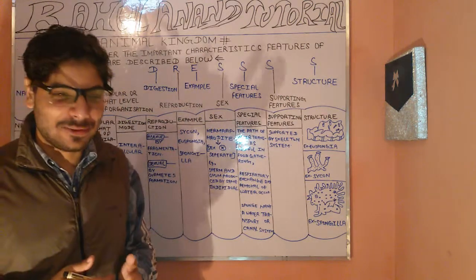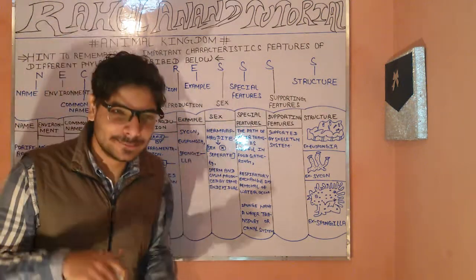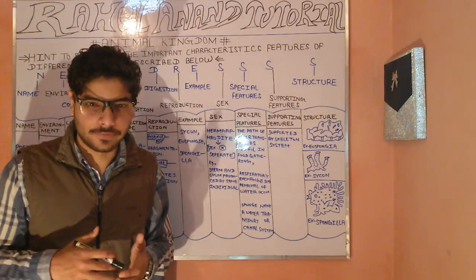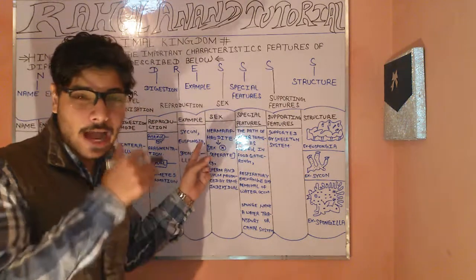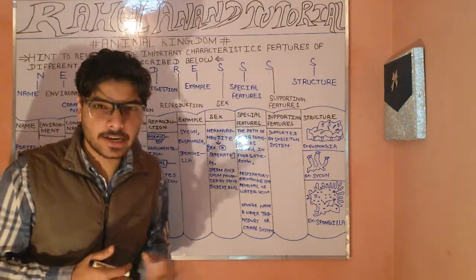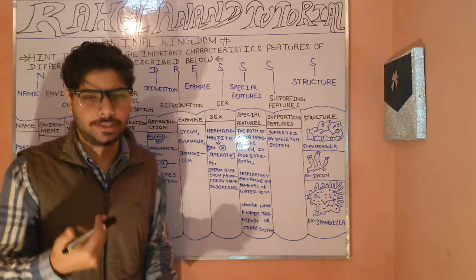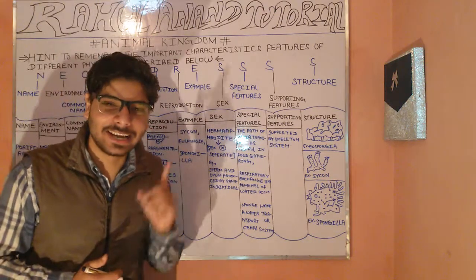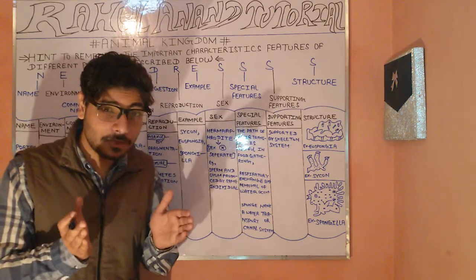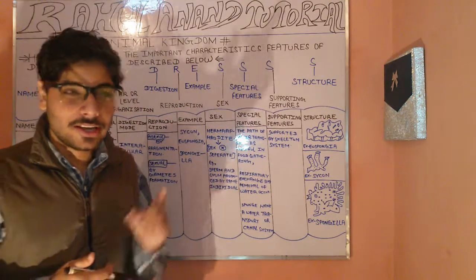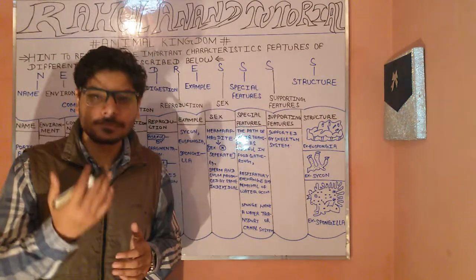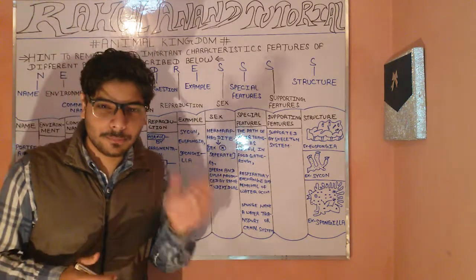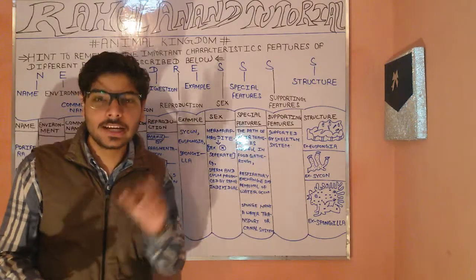Now let's understand the features of Porifera, which belongs to the phylum level. Using our NICE and DRESS framework: first is the name. 'Porifera' can be divided into two words — 'pori' means pores, referring to the body having a porous texture, and 'phera' means bearer. So Porifera means pore-bearer.